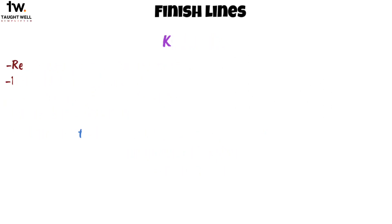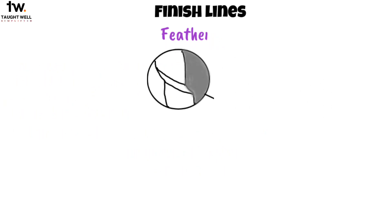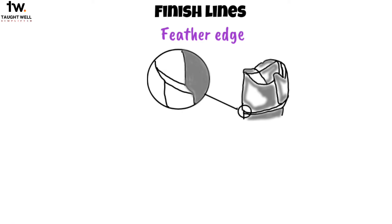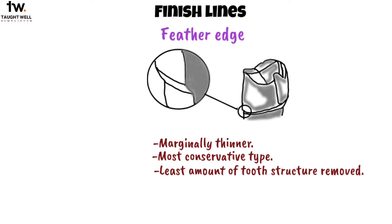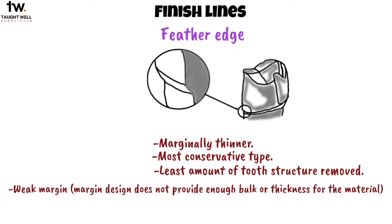The last finish line type is feather edge preparation. It is similar to a knife edge preparation but is marginally thinner. It is the most conservative type of finishing line since the least amount of tooth structure is removed. However, the margin is weak since this margin design does not provide enough bulk or thickness for the restorative material.